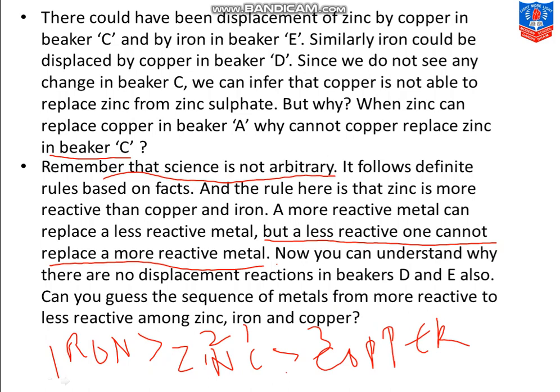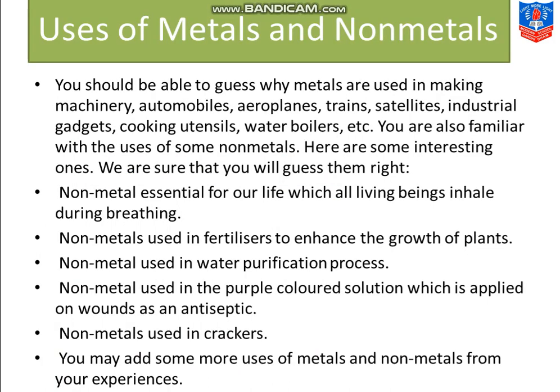So I hope you understood displacement reactions. Our next and last topic of this chapter is uses of metals and non-metals. You should be able to guess why metals are used in making machinery, automobiles, aeroplanes, trains, satellites, industrial gadgets, cooking utensils, water boilers, etc. Metals are used extensively because their physical and chemical properties make them suitable for these applications.